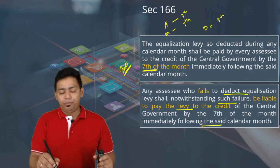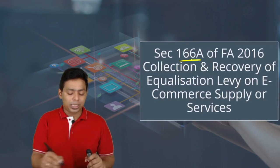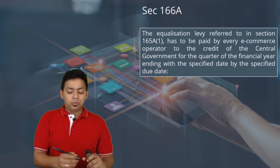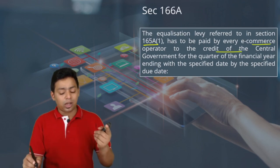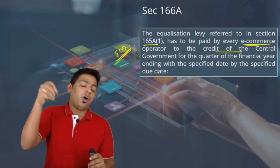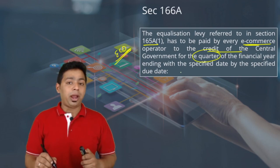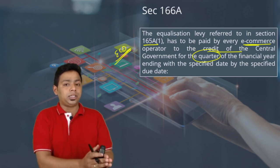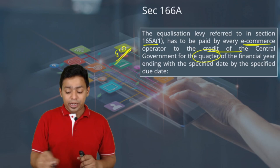If you do not deduct and pay, you become personally liable — this is a personal liability imposed by the government. Section 166A covers the new 2 percent equalization levy. The equalization levy under Section 165A for e-commerce operators has to be paid by every e-commerce operator to the credit of the central government. Here the obligation is not on the payer but on the e-commerce operator itself — on Amazon itself. This obligation is quarterly, because handling monthly data is very difficult.